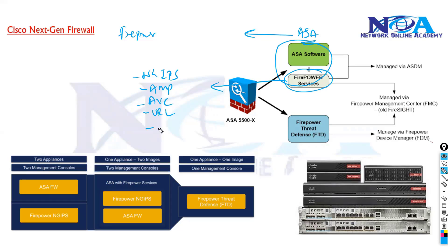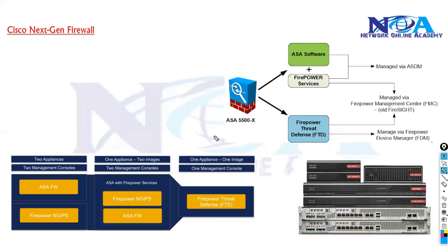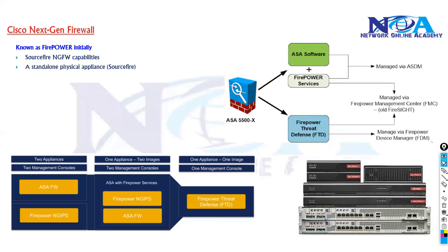Firepower also supports URL filtering, application filtering, and application control. All these features can be combined. If you combine ASA with Firepower services in today's network, we call this FTD — the Firepower Threat Defense — which is the product name.